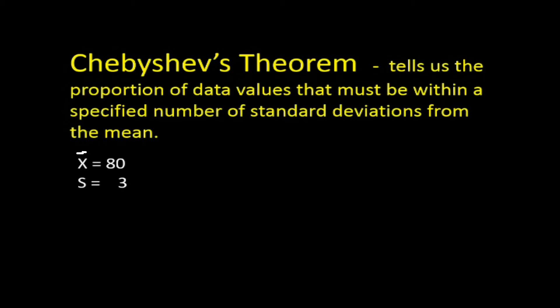This brings us to an important theorem in statistics called Chebyshev's theorem. The theorem tells us the proportion of data values that must be within a specified number of standard deviations from the mean. For example, with a mean of 80 and a sample standard deviation of 3, this theorem tells us the proportion of students who got between 3 points below the mean and 3 points above the mean — that is one standard deviation. So with a mean of 80, this theorem tells us the proportion of students who scored between 77 and 83. Using this theorem, we come up with something called the empirical rule.